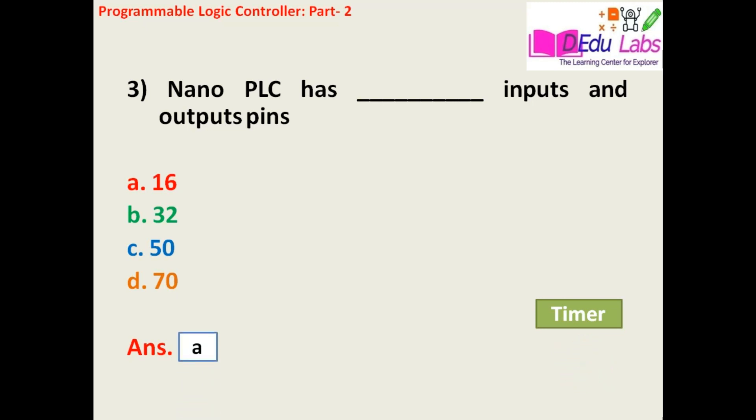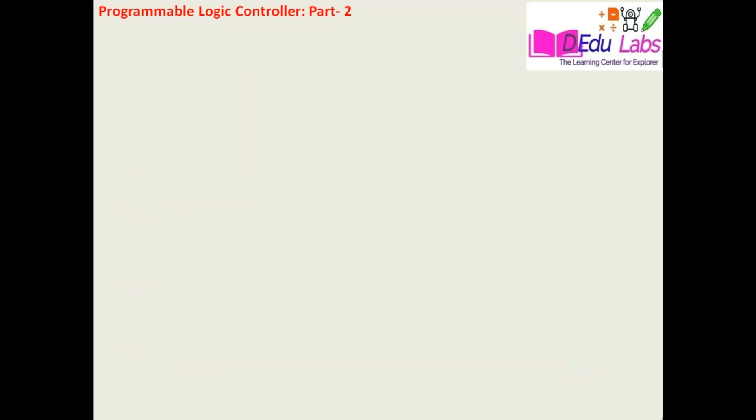The answer is 16, that is option number A. The Nano PLC is a very smallest PLC and it has a very less amount of input and output pin configuration. So the answer is A, that is 16.